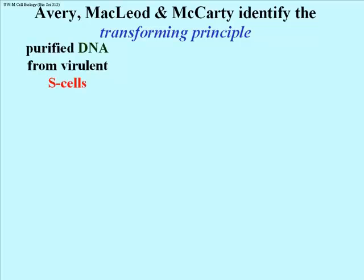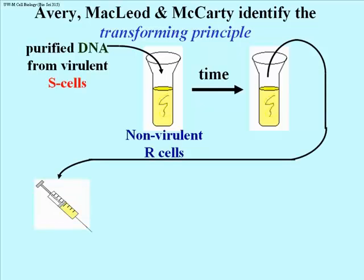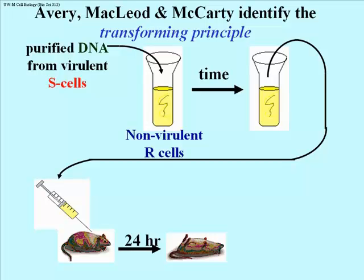Avery, MacLeod, and McCarty actually identified what came to be called the transforming principle — the molecule which causes the genetic transformation. What they did was purify DNA from virulent cells, mix it in a tube with non-virulent R cells, wait for a time, and then take the resulting cells and inject them into a mouse. The mouse died. You could take cells out of that dead mouse and grow them on agar, confirming the transformation.